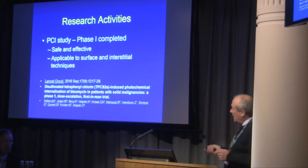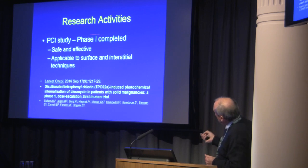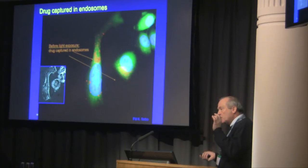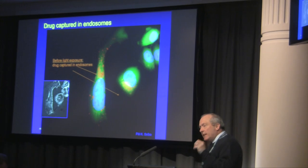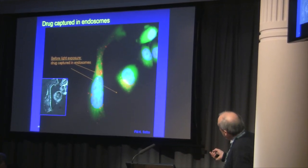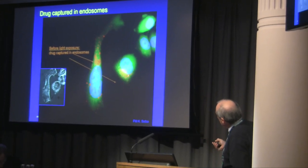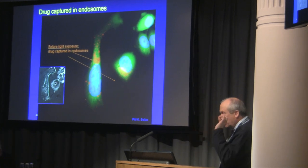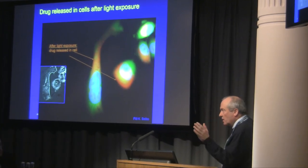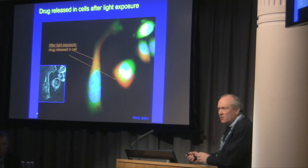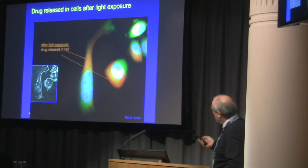Moving on to research: we've now completed the first phase of the PCI study, which is published. PCI means using PDT to release drug at the target site — for example, bleomycin intracellularly. The drug is wrapped up in vesicles, stopping it from getting to its target. You give a low dose of PDT and it's released. We've got some of the PCI experts here in the room if anyone wants to discuss this further.